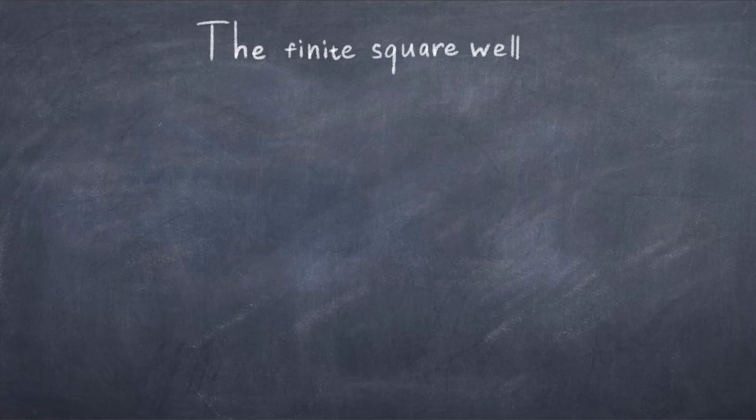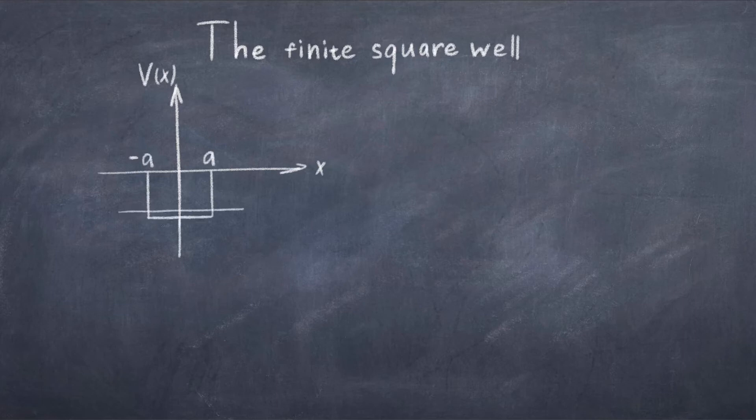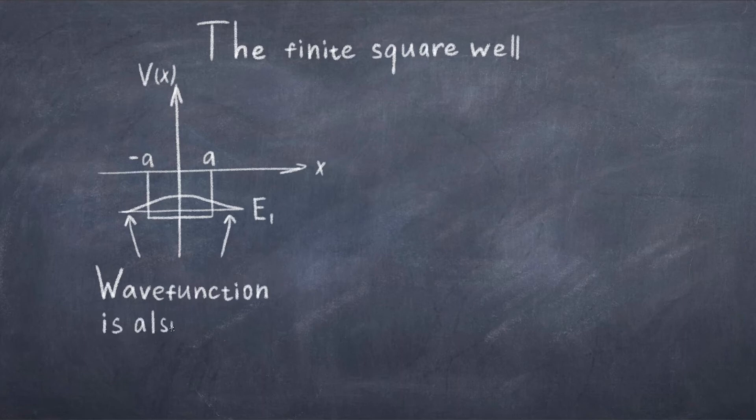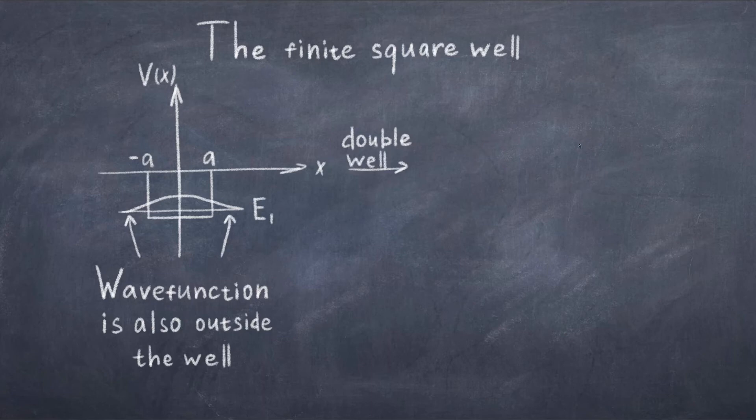A much more interesting and more complicated potential is the finite square well potential. This potential is very similar, but its walls are now finite and that makes a huge difference. If we again solve the Schrödinger equation and figure out the wave function for this potential, we find something very unexpected. If we look at where the wave function allows the particle to be, we can see that there is a small probability that it is outside the square well. Just by making the walls finite, the wave function has already begun breaking classical physics and begun wandering off into the wall.